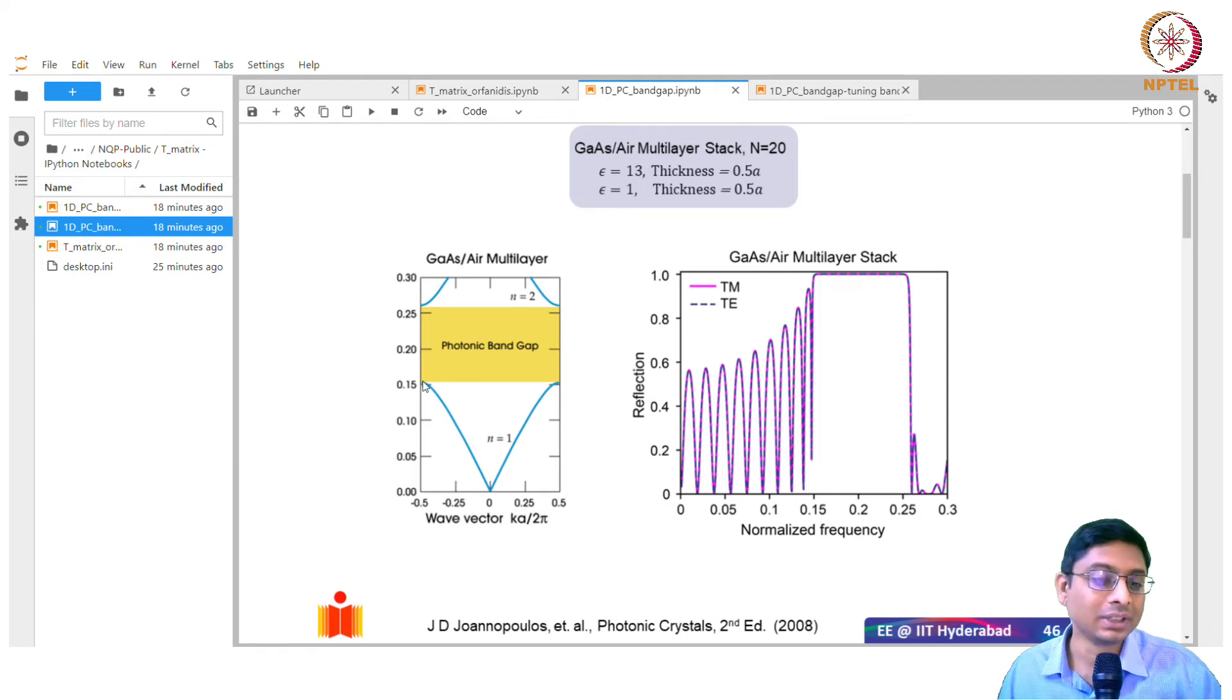This particular case we discussed is a gallium arsenide air multilayer stack consisting of some number of layers. You have 13 and 1 as refractive indices. With this large contrast, the thicknesses of these slabs are equal. There's a large band gap that opens. From normalized frequency of 0.15 to 0.25, you have a band gap, so light cannot propagate and you expect reflection.